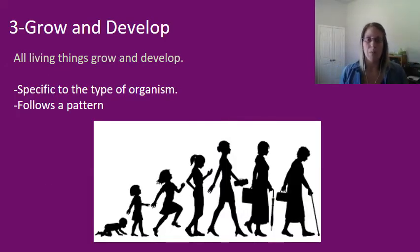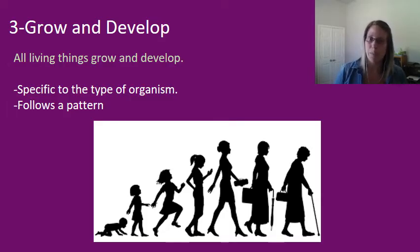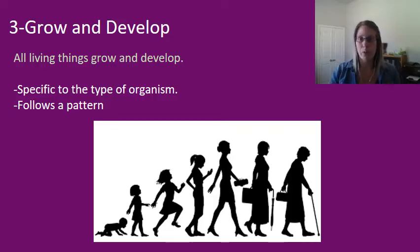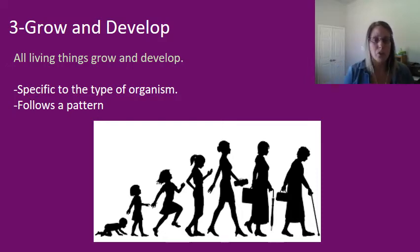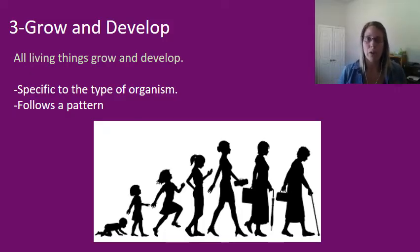The third characteristic is grow and develop. All organisms grow and develop, and it's specific to the type of organism. For example, humans start as babies, grow into children, progress into adulthood, and later into old age. There's an order — usually a specific pattern for each type of organism.